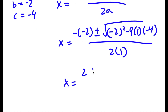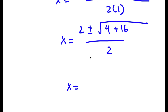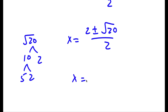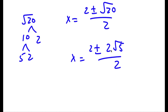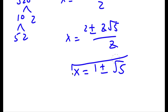So x equals negative of negative 2, which is positive 2, plus or minus the square root of negative 2 squared — which is positive 4 — minus 4 times 1 times negative 4, which is positive 16. All over 2 times 1 is 2. So I have x equal to 2 plus or minus the square root of 20 over 2. The square root of 20 is the same thing as the square root of 4 times 5, which is 2 root 5. So x equals 2 plus or minus 2 root 5, all over 2. Dividing through by 2, I get x is equal to 1 plus or minus the square root of 5. So this is my answer.